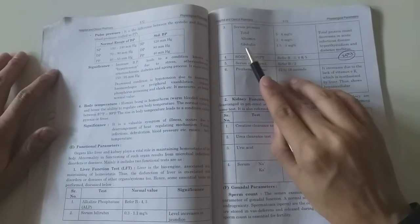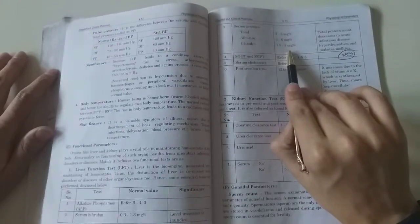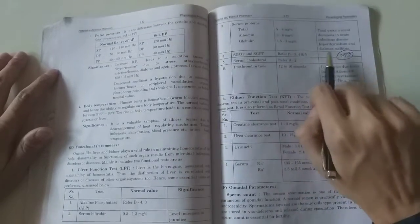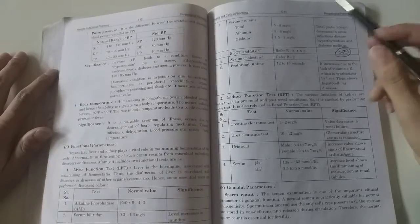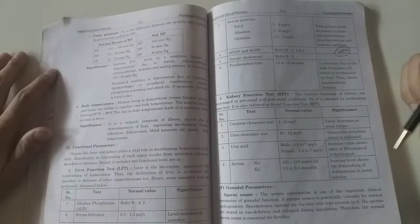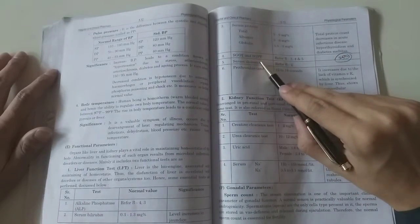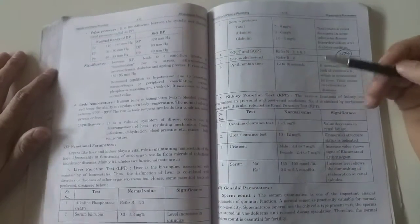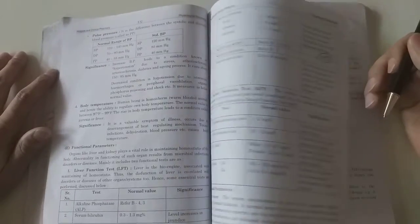Serum protein: total protein is 6 to 8, albumin is 3.5 to 5, globulin is 1.5 to 3 mg per deciliter. Total protein count decreases in acute infectious disease, hyperthyroidism, and diabetes. If we see reduced serum protein levels, we can suspect hyperthyroidism or diabetes. SGOT and SGPT levels are also examined, as we've seen in previous chapters on blood parameters and heart parameters.